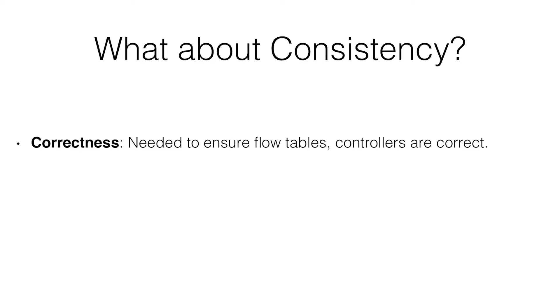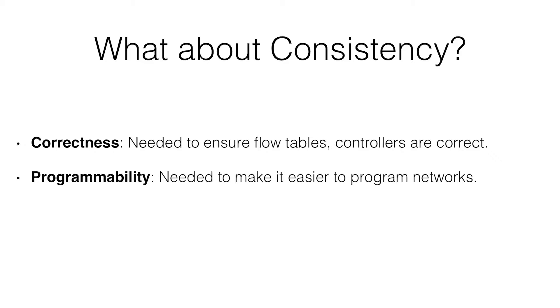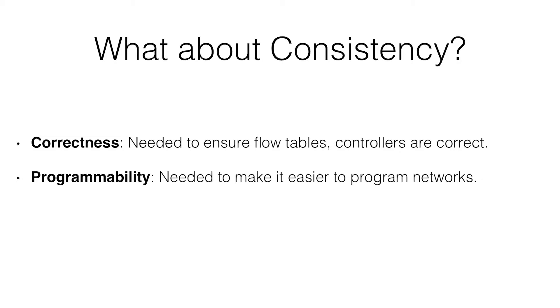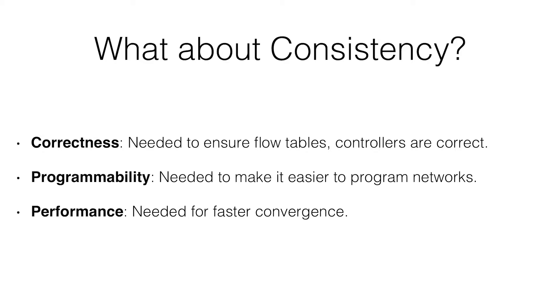There are three reasons why people bring up consistency. One is correctness — you need to ensure that the flow tables and controllers are correct. One is programmability — we went to SDN to allow people to write algorithms themselves, but without consistency, writing programs would be really hard. The last one is performance, which I mentioned as convergence. What I've shown is correctness and performance really aren't affected by this consistency thing.